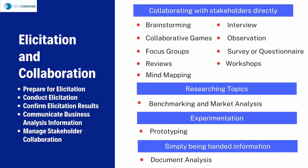The second knowledge area is Elicitation and Collaboration. This knowledge area has two key things: elicitation and collaboration. The first three tasks are quite related to elicitation itself. Elicitation is done in four ways: first, collaborating with stakeholders directly; second, researching the topics; third, experimentation; and fourth, when information is simply being handed over to a business analyst. Let's look into the techniques relevant when a business analyst collaborates with stakeholders directly. Sometimes they have a group setting.